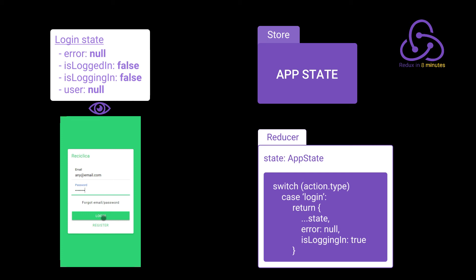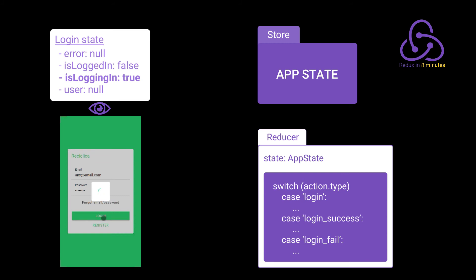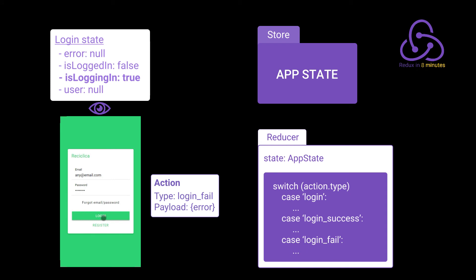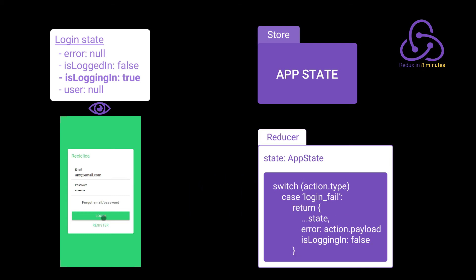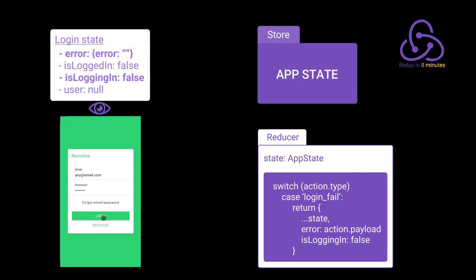After execution, the app state is updated. The login page is watching the logging state, so it will realize the user is trying to log in and will show the loading component. What happens next is that we get an error on logging. The service dispatches a new action with the type 'logging fail' and a payload containing the error returned by the back end. The reducer receives that action, finds out how to handle it, and returns the new state — which is based on the old state but includes the logging error and indicates the user is not logging in anymore. The loading component disappears and the page shows the logging error.